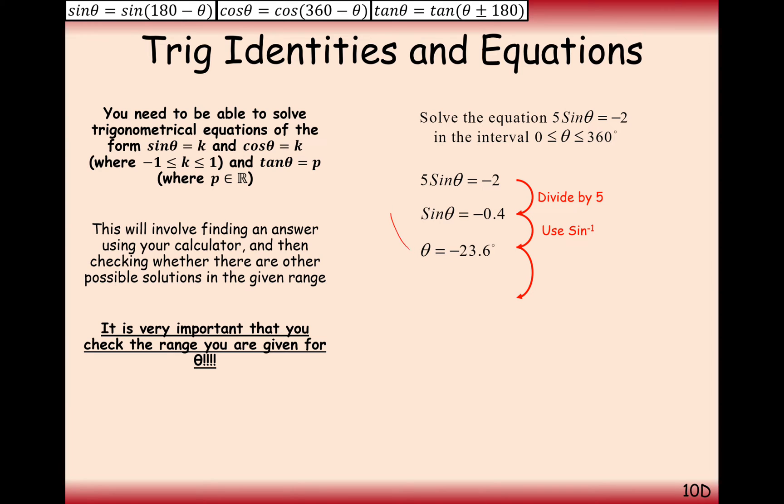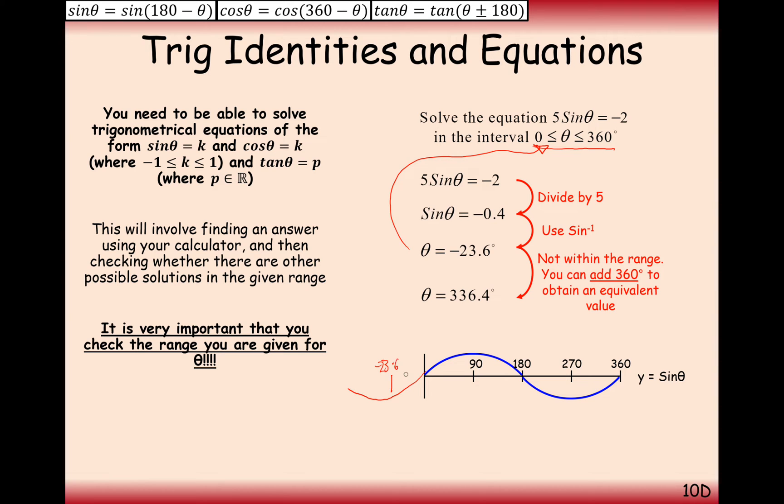Now notice how minus 23.6 is nowhere in between 0 to 360. That's not really that useful. So this is not going to be one of our final answers. However, it is going to be useful in generating other answers. Now notice here how because the sine graph repeats itself every 360 degrees, we can add on 360 degrees onto our answer here. So if you think about it, our graph would have gone backwards. And at minus 23.6, we will have got one of the solutions for minus 2 over 5.